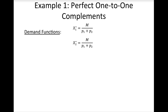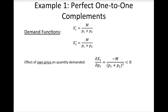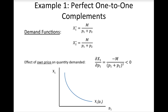In addition to analyzing the effect of income on quantity demanded, we can analyze the effect of prices. To analyze the effect of a good's own price on quantity demanded, take the partial derivative of the demand function with respect to price. Since this fraction is unambiguously negative, we know that quantity demanded falls as price increases, which is consistent with the law of demand. Alternatively, we can graph the demand function in X1, P1 space, which gives a downward sloping shape typical of a demand function.